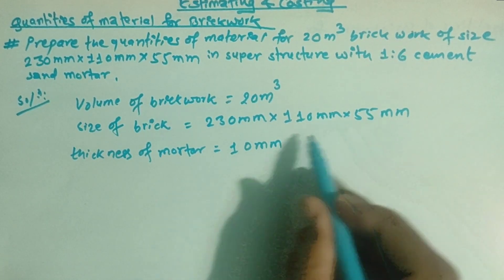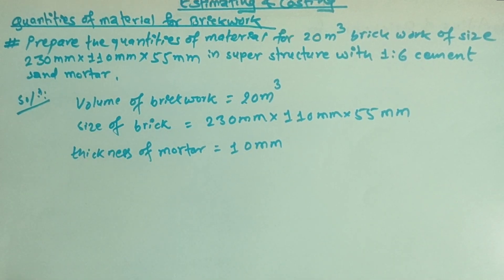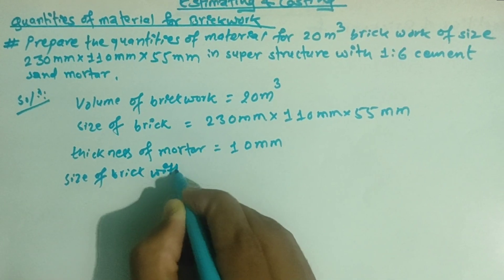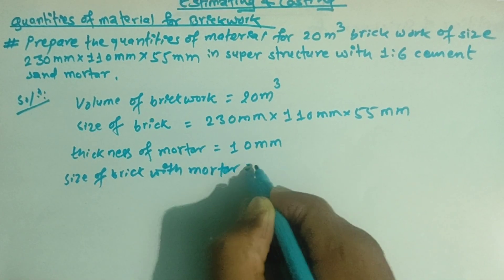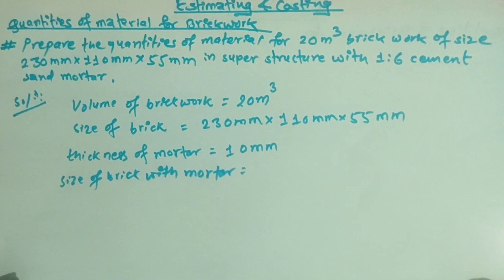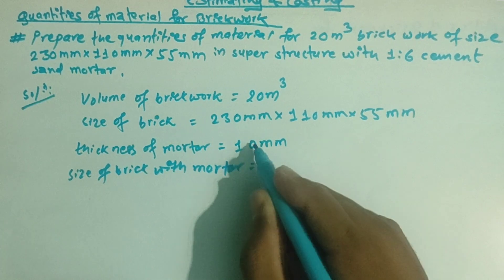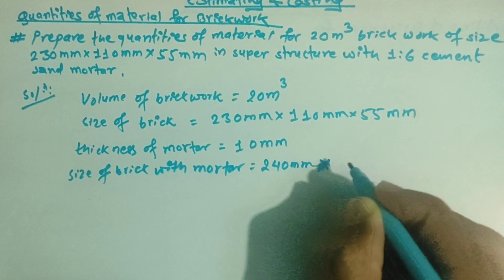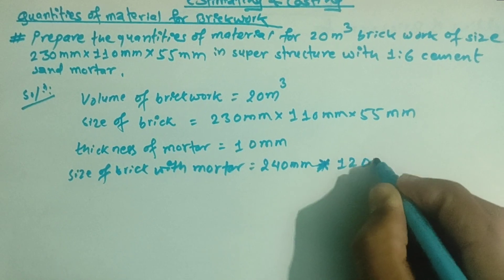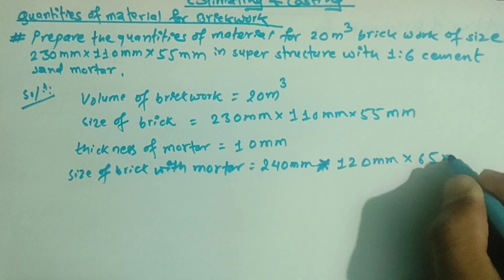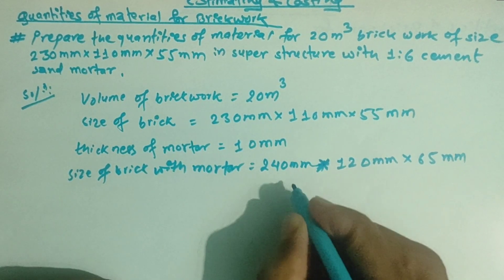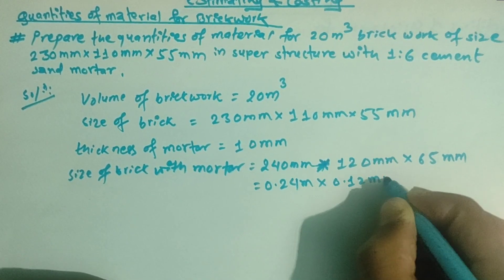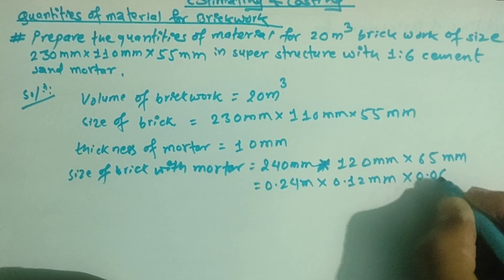The size of brick with mortar: the dimensions are 0.24 m, 0.12 m, and 0.065 m.